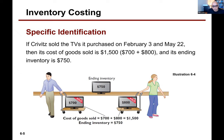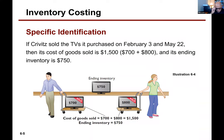We mentioned last time three methods: specific identification — you can see on the slide — FIFO (first in, first out), and LIFO. And then there's another method called weighted average. Those are the three we'll spend most of our time on: LIFO, FIFO, weighted average. Specific identification is one that is pretty straightforward.